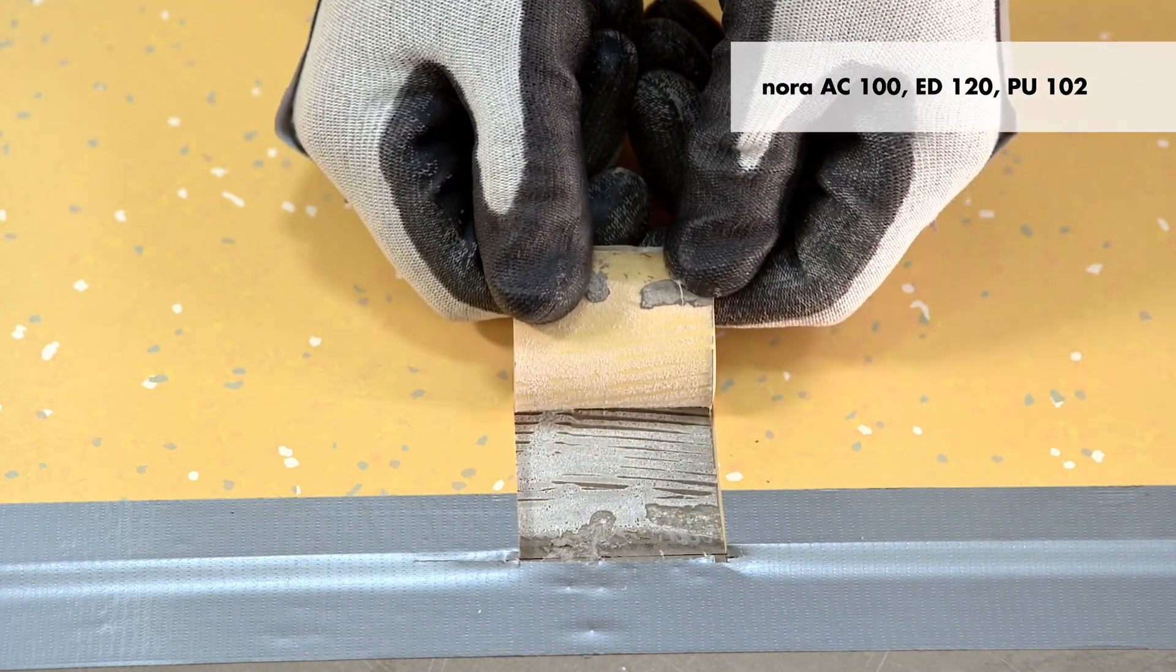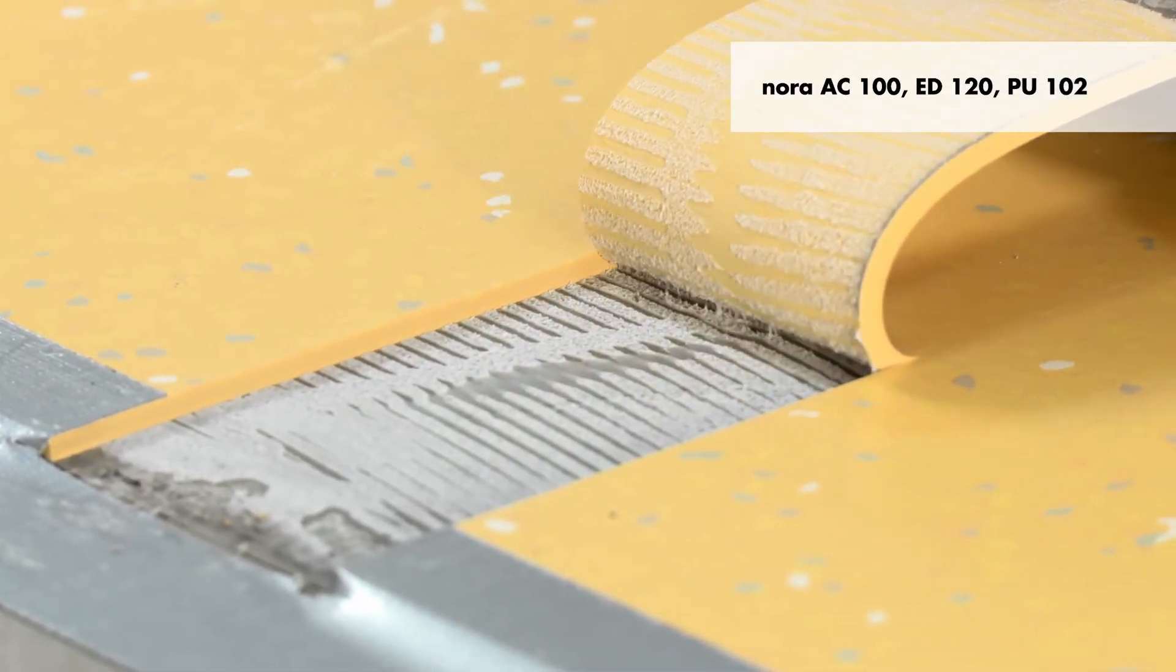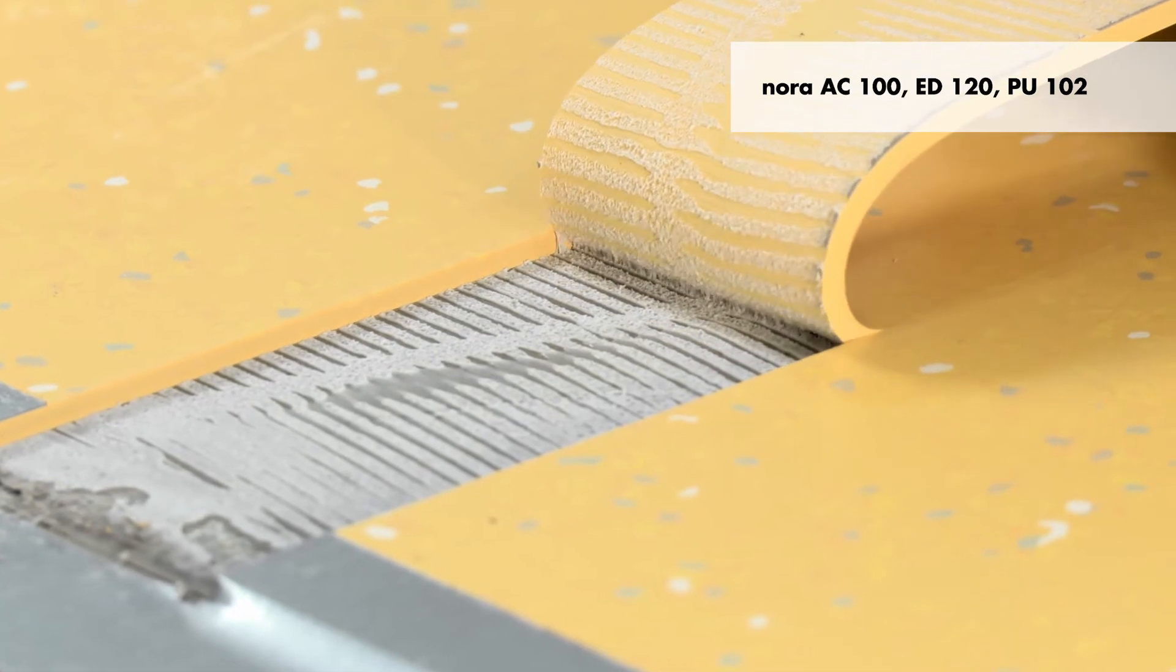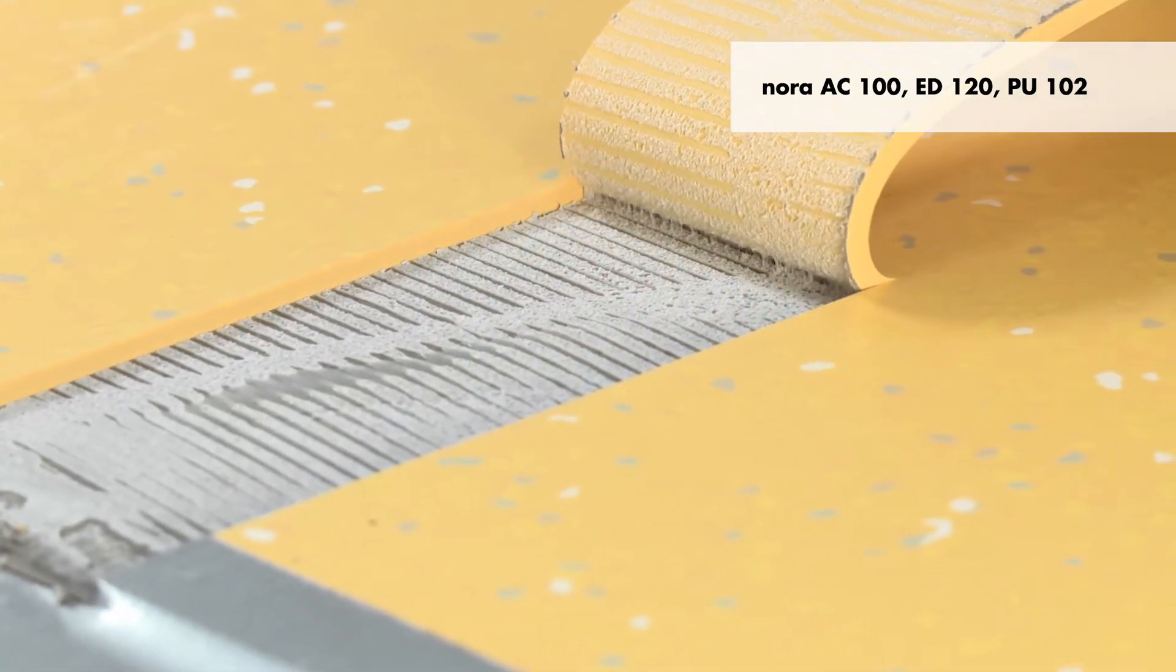The bond test is successful if the flooring requires a great deal of effort to pull up, providing you find no sign of moisture. You will see approximately the same amount of adhesive on both the substrate and the back of the flooring.